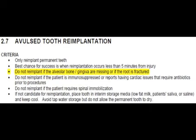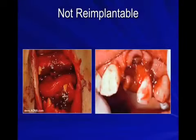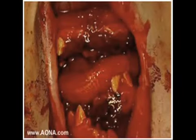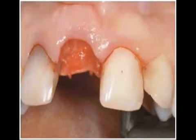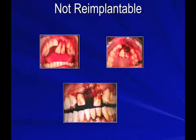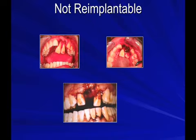The protocol also indicates that we should not re-implant if the alveolar bone or gingiva are missing, or if the root is fractured. These two images demonstrate significant damage and maceration of the gingiva, and the upper left figure is suggestive of alveolar bone fractures as well. These two images demonstrate fractured teeth — the one on the left is still in place, while the one on the right represents an impacted tooth. The two upper pictures demonstrate posterior displacement of teeth — although not avulsed, they are often associated with fracture of the underlying bone and should not be manipulated. The lower image again demonstrates significant maceration of the gingiva, precluding safe re-implantation.